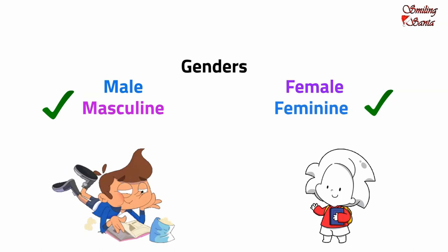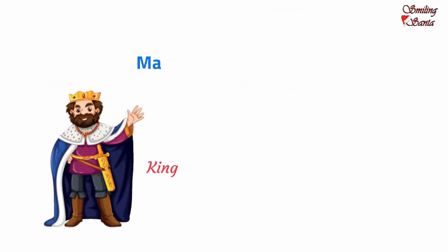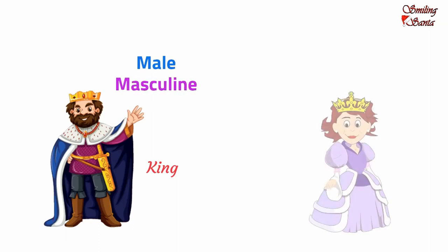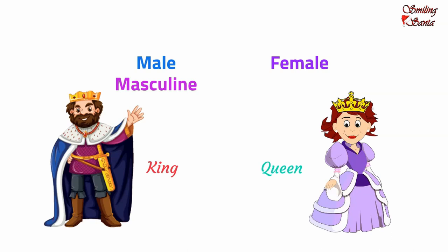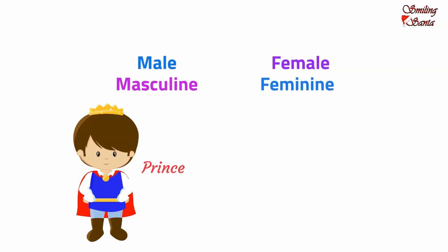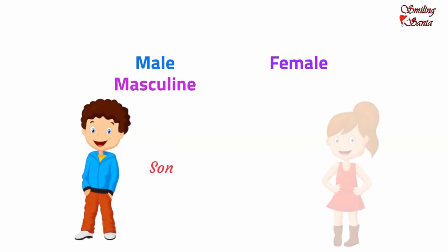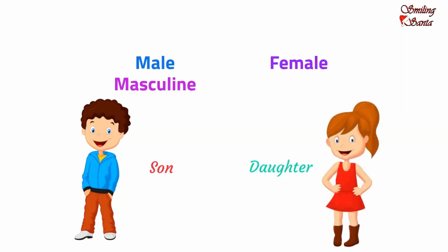Let us see some more examples. King refers to a male, so king refers to the masculine gender. A queen refers to a female, so queen belongs to the feminine gender. Prince refers to a male, so it is of the masculine gender. The feminine gender would be princess. Son refers to a male, so son is of the masculine gender. Daughter refers to a female, so it is of the feminine gender.